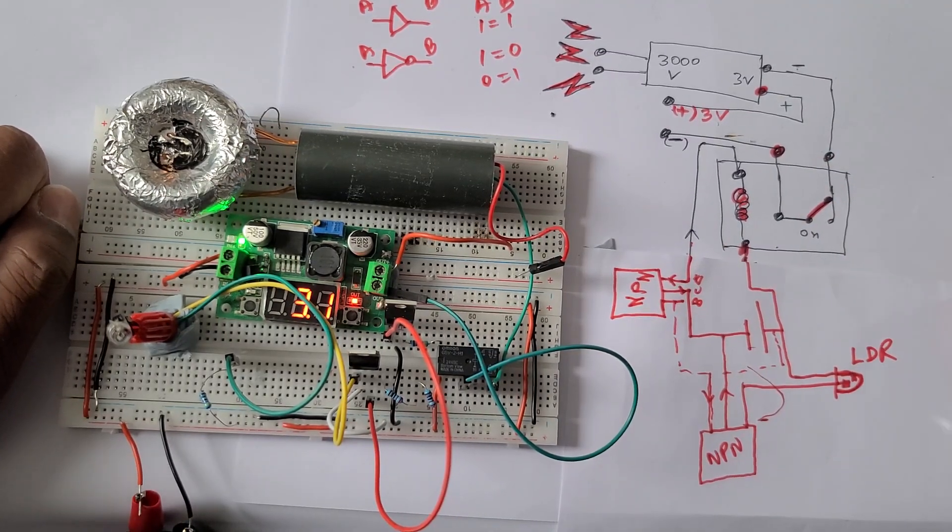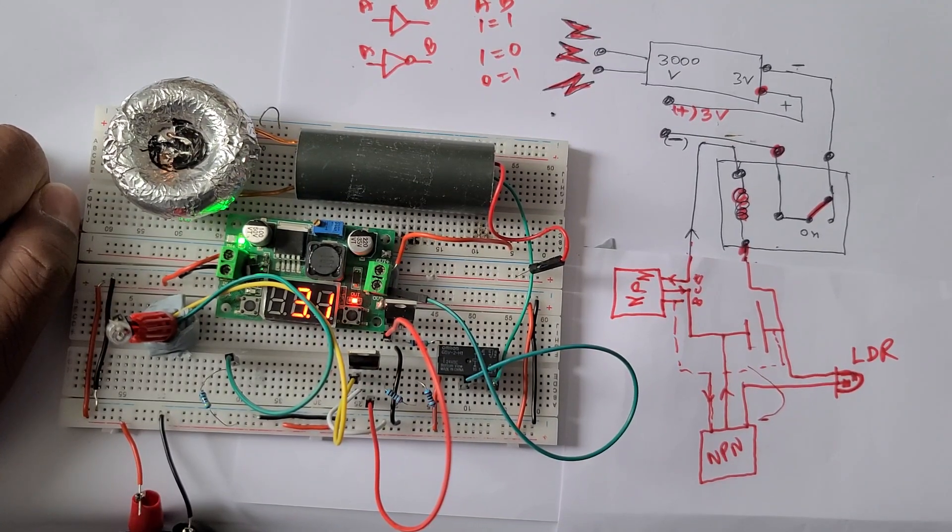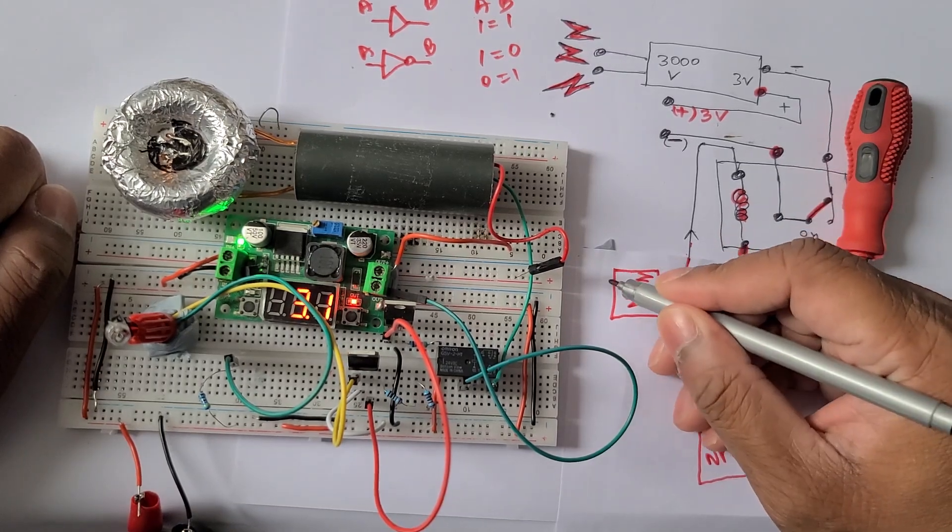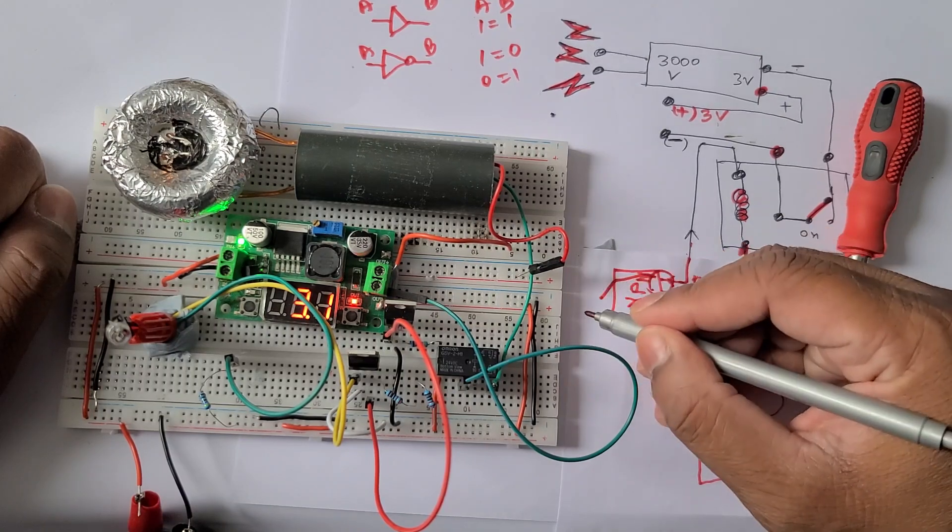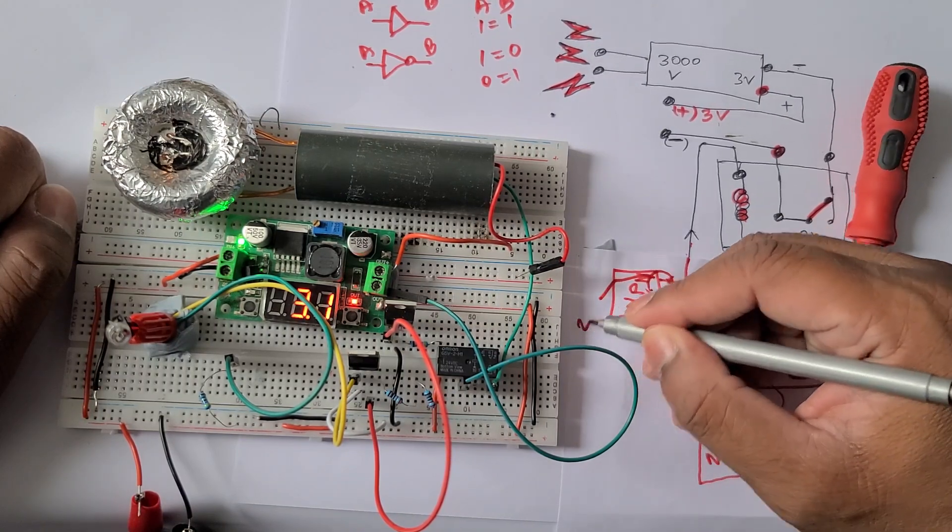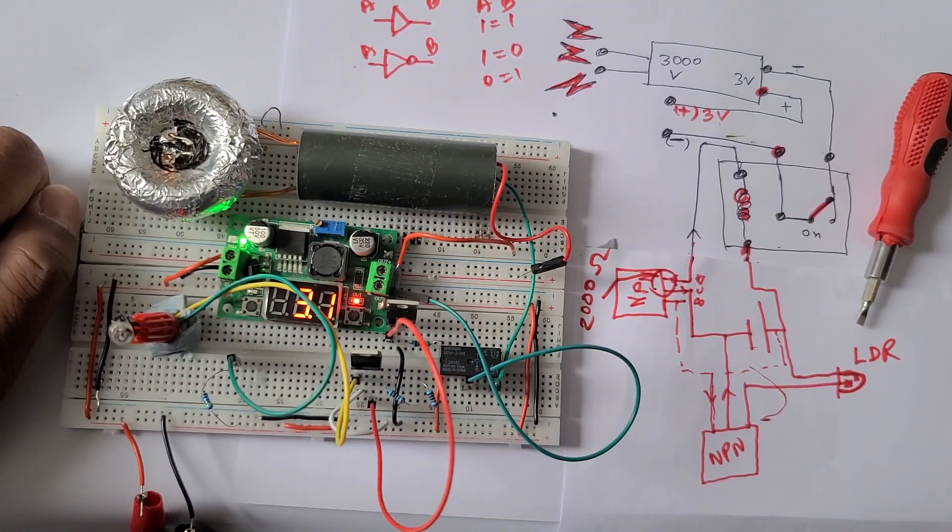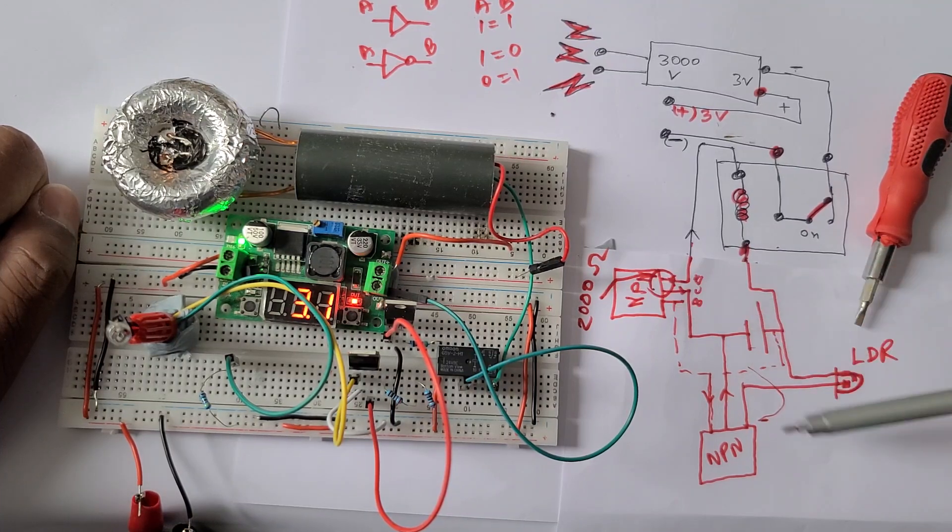Now we know the principle that electricity follows the path of least resistance, so this will be used here. This part already has 2000 ohm resistance. Now if you can give it a path less than 2000 ohm, electricity will not follow through this way, it will be diverted.